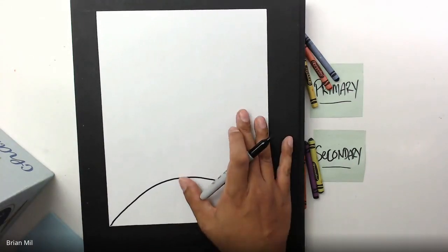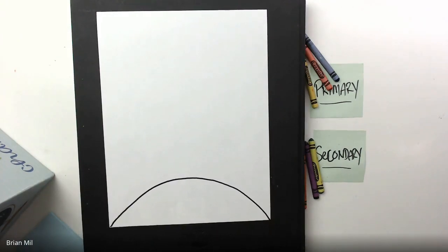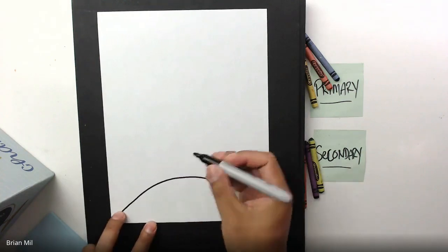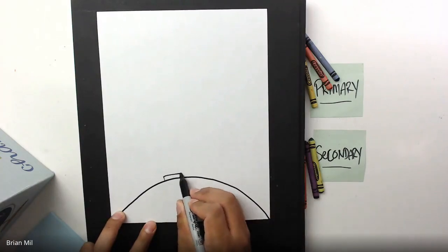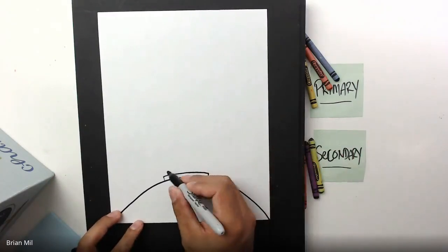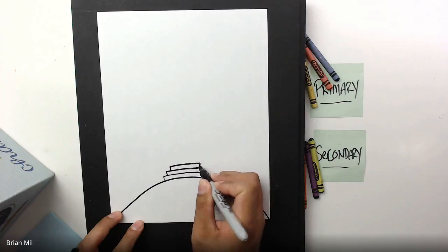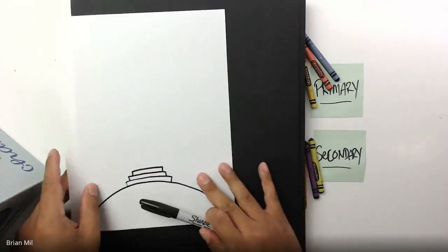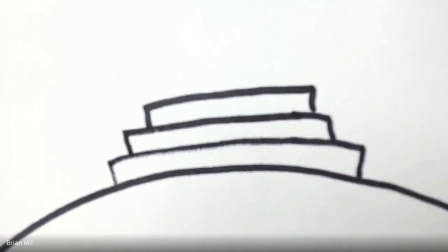My next step, I want to draw a set of three rectangles. My first rectangle is going to be nice and large, it's going to be on top of the hill like this. Then my next two rectangles, they're going to get smaller in width. I'm going to make one on top of that, another one on top of that. If I zoom in for you guys, it should look something like this. This is going to be your set of stairs on top of the hill.